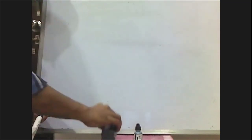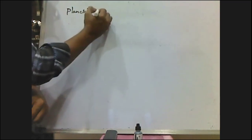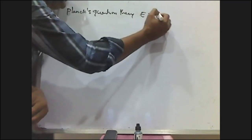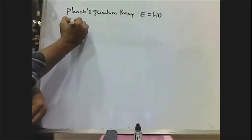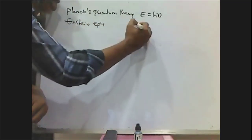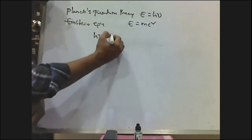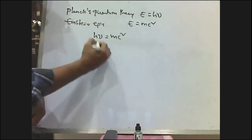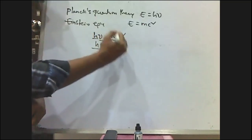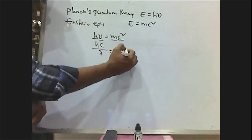From Planck's quantum theory, we know that E = hν. And from Einstein's quantum theory, we know that E = mc². From these two equations, we can write hν = mc². We know that ν = c/λ, so h(c/λ) = mc², giving us λ = h/(mc). Where H is Planck's constant, ν is the frequency of light, m is the mass, and c is the velocity of light.